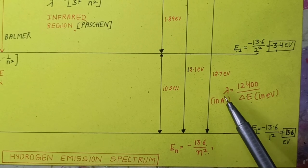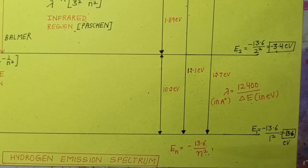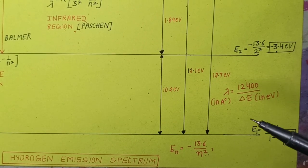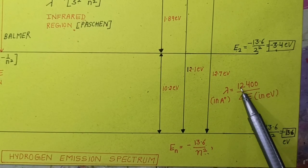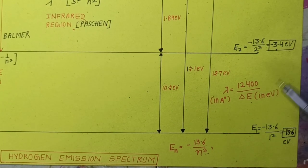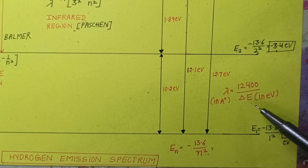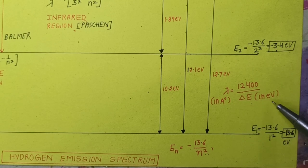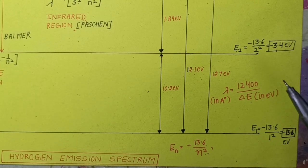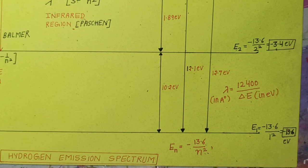To calculate wavelength for a transition from a higher state to a lower state, the shortcut formula is: lambda equals 12400 divided by the difference in the two energy levels (in electron volts), and the wavelength will be in Angstroms. If we remember delta E, this makes calculation very easy.